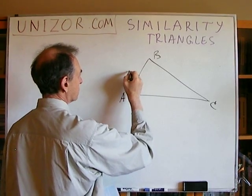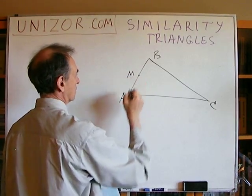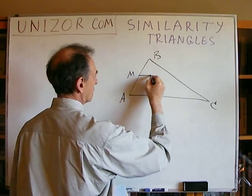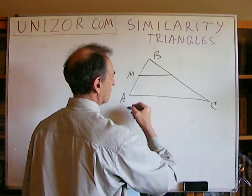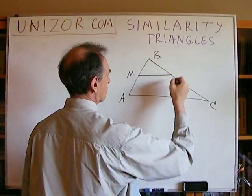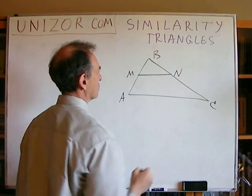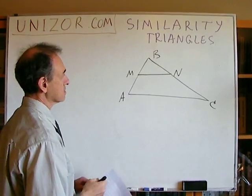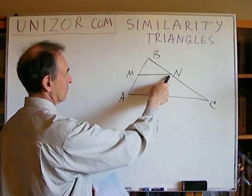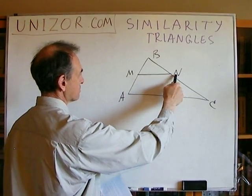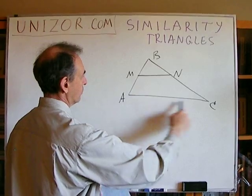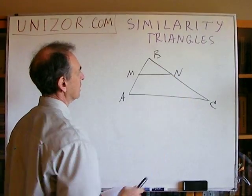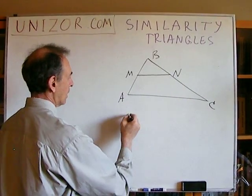...and that line parallel to the base intersects another side at point N, then the smaller triangle AMN is similar to the original triangle ABC.